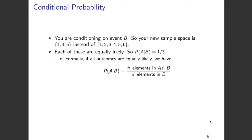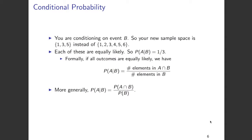Formally, P(A|B) is the number of elements in A ∩ B divided by the number of elements in the set B. The number of elements in A ∩ B is 1 (element 1 itself), and the number of elements in B is 3 ({1, 3, 5}). More generally, P(A|B) is given by P(A ∩ B) divided by P(B). It is important to note that conditional probability is only defined if P(B) > 0, because if P(B) = 0, then P(A|B) becomes undefined.